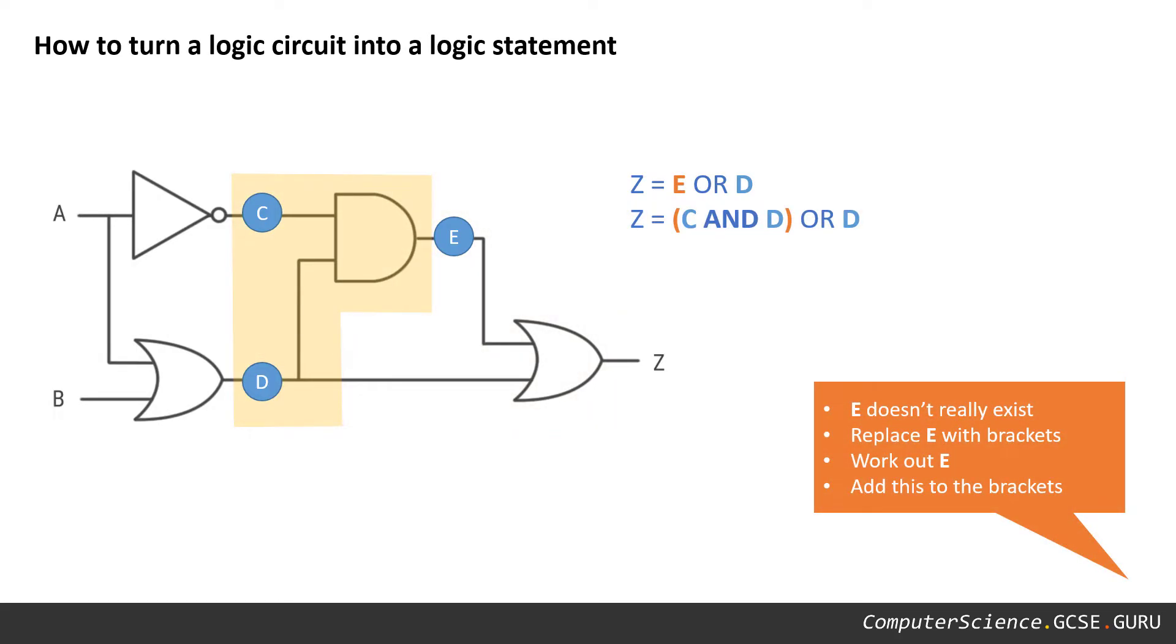Now the problem is E doesn't actually exist. It's something we've made up to help us work this problem out. So our next step is to break E down into a further mini problem that requires a set of brackets and to expand out what E actually means. In this case, E is the equivalent of C and D.